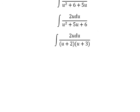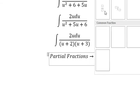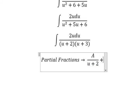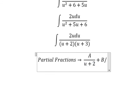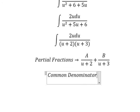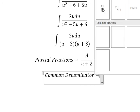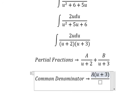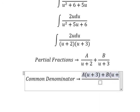Next we need to do partial fractions. So we have capital A over u plus 2 plus capital B over u plus 3. Next we do common denominator. So we have capital A multiplied with u plus 3, capital B multiplied with u plus 2.